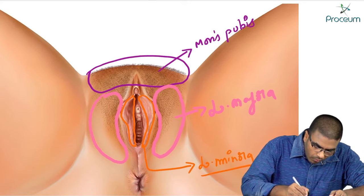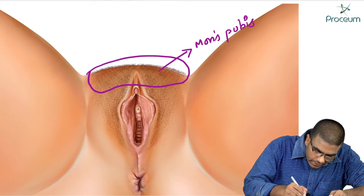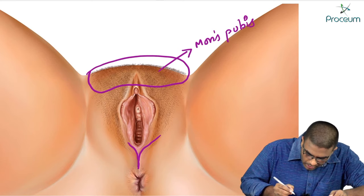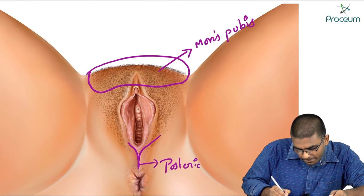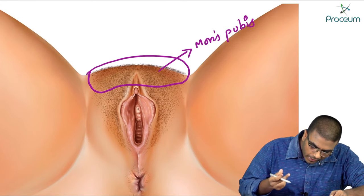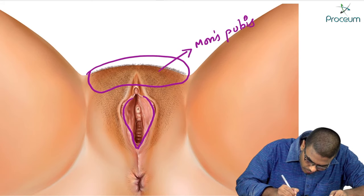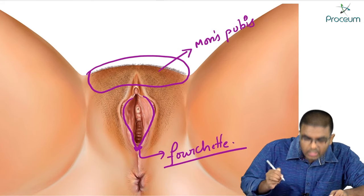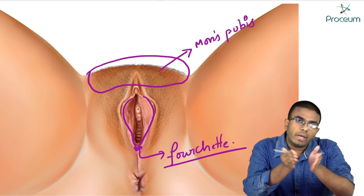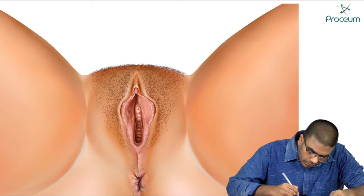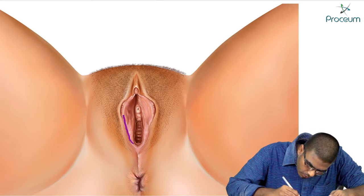The labia majora unites posteriorly and forms a structure known as posterior commissure. In the same way, labia minora also meet posteriorly and forms a structure known as fourchette. The fourchette is formed by the fusion of the labia minora, and the posterior commissure is formed by the fusion of the labia majora. The labia minora also fuse anteriorly over an erectile body.